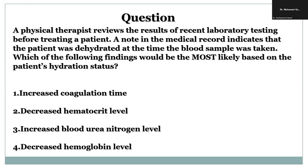The normal value for blood urea nitrogen is 10 to 20 mg per deciliter in adults. If it is above that range, you would expect an increase in blood urea nitrogen, and this could be associated, as in this case, with dehydration.